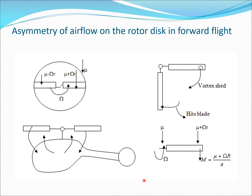Looking at this diagrammatically, on the rotor disk in forward flight we have the forward speed mu. On the advancing side of the rotor, the velocity is going to be much higher — it is mu plus the rotation speed component. On the retreating side, it is mu minus the rotation speed component. There is also a reverse flow region. So there is much higher velocity on the advancing side, meaning the loads are greater there and less on the retreating side, resulting in a lack of symmetry across the disk.